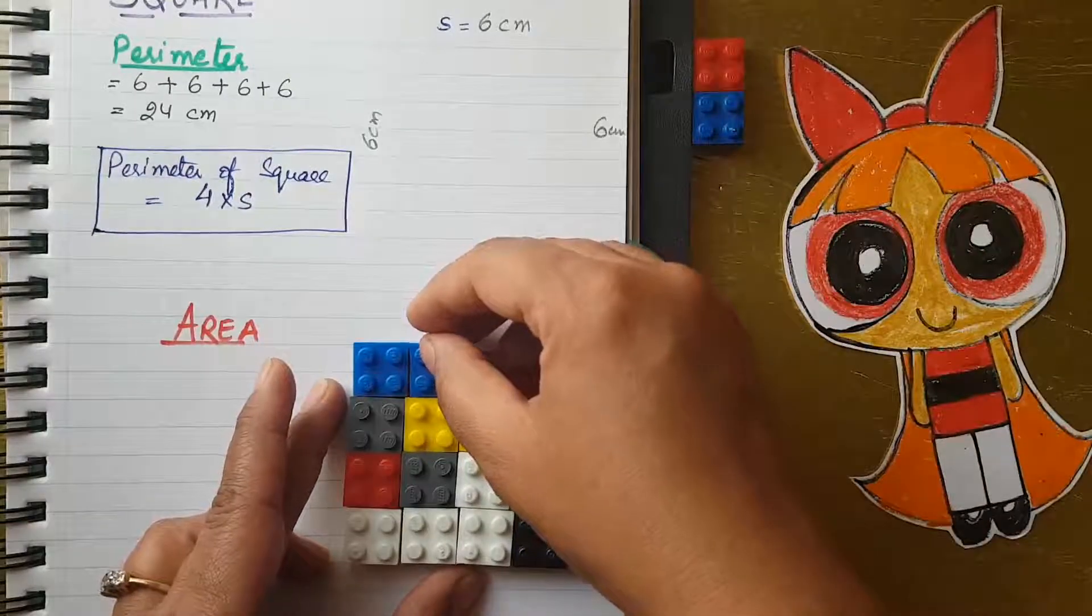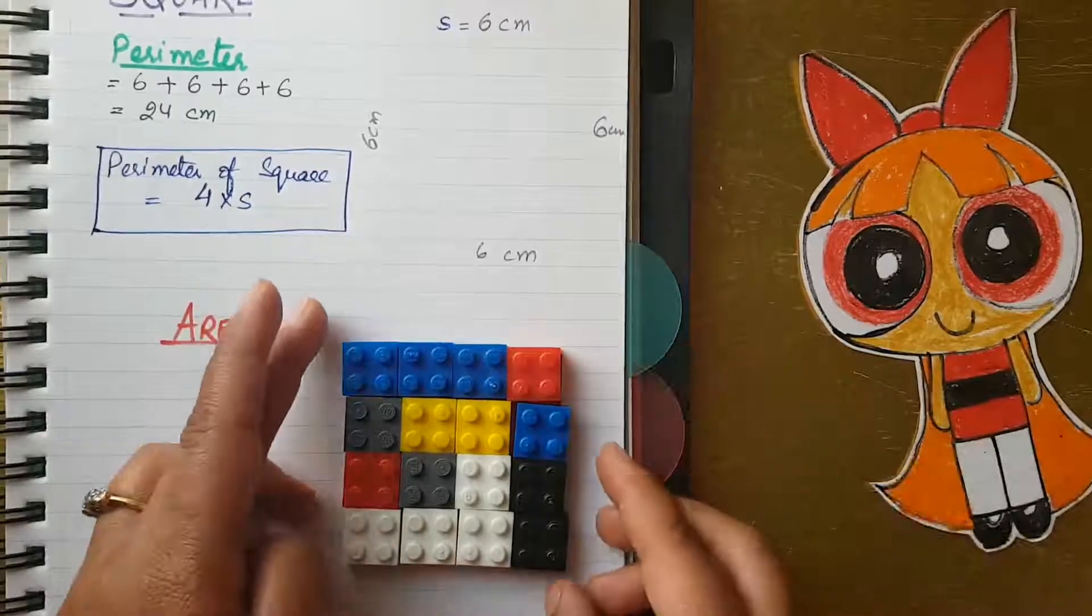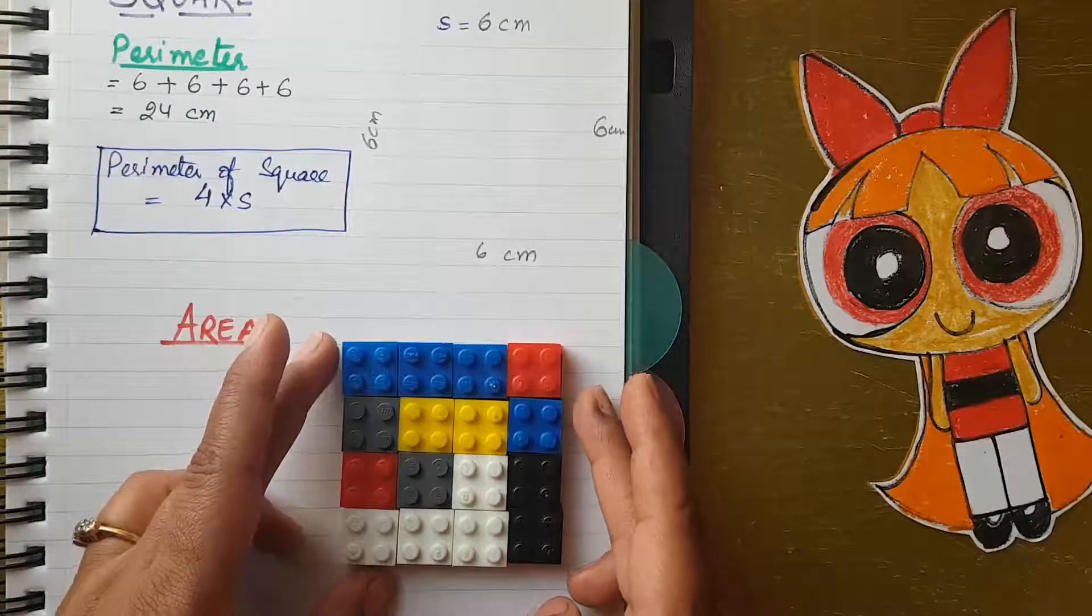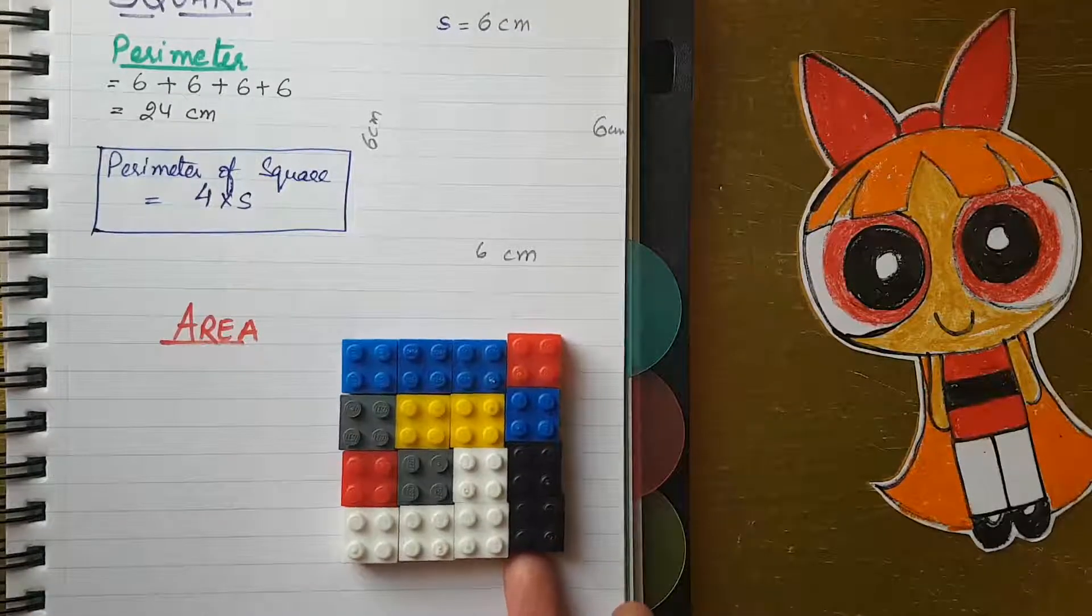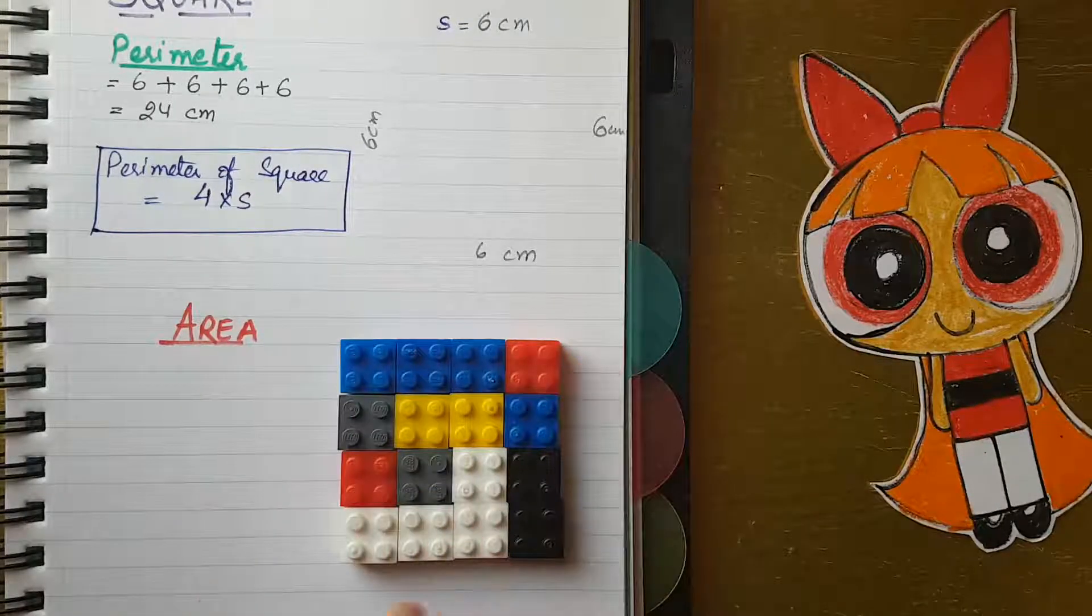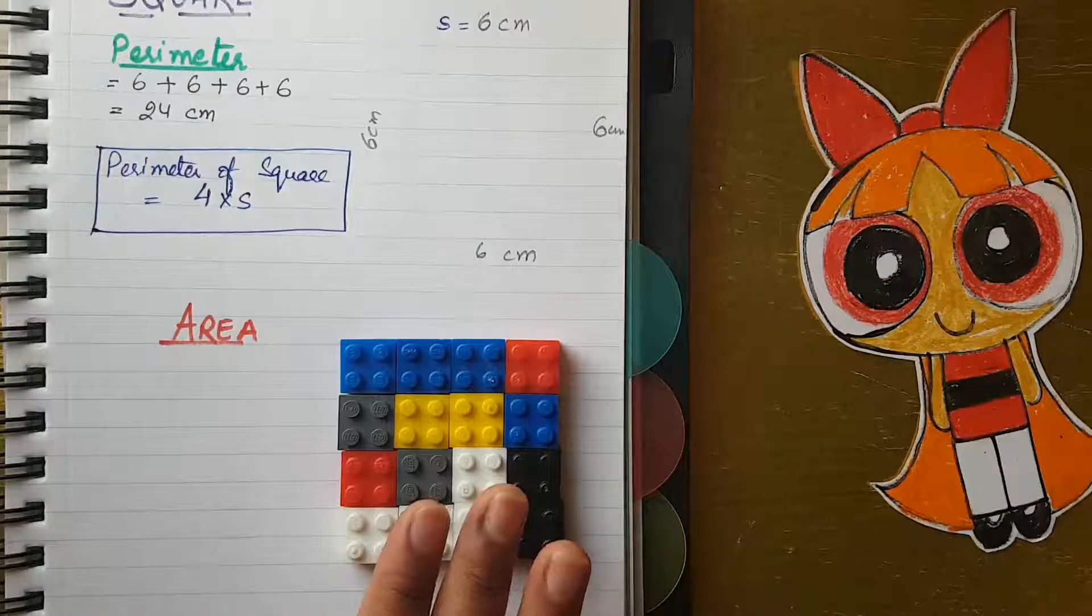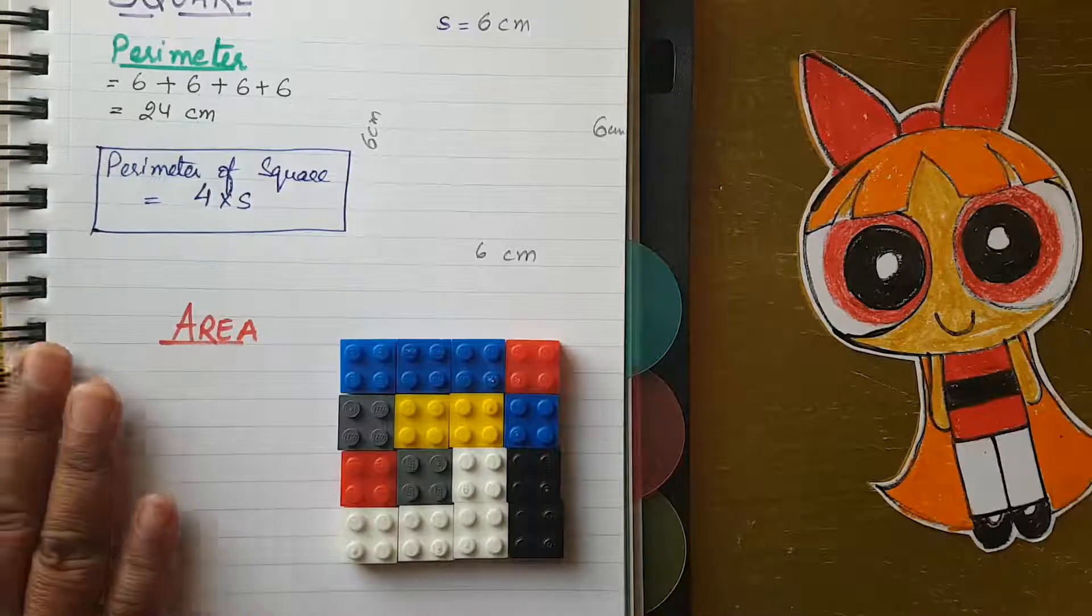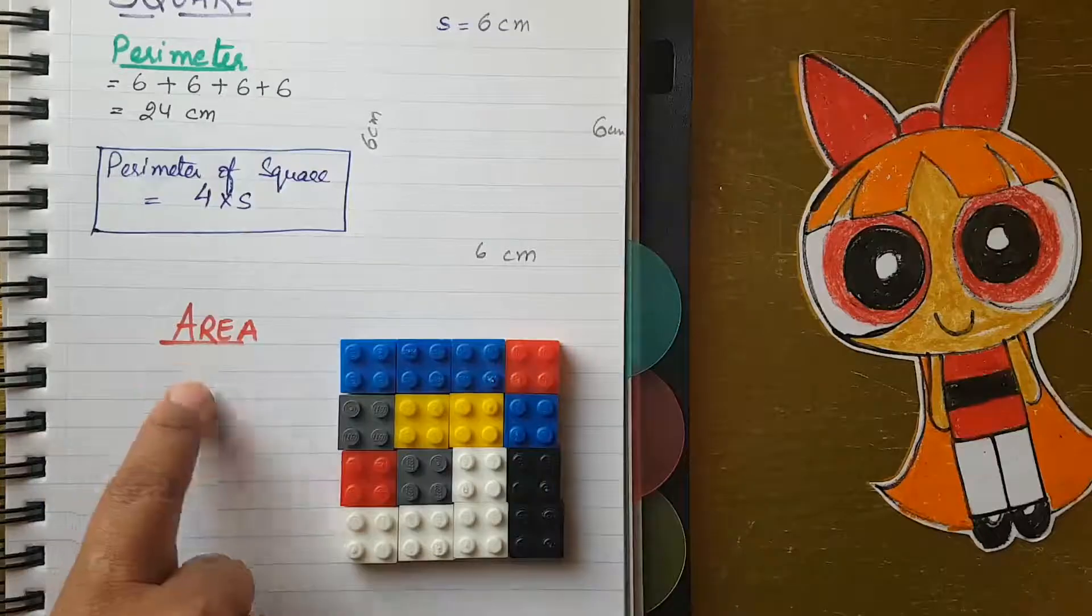Look, my square is filled with this Legos block. Isn't it beautiful? So this space that is occupied inside, this occupied space is called area. Now I hope you understand the perimeter. Perimeter is only the boundary. Area is the space which is occupied inside the square.